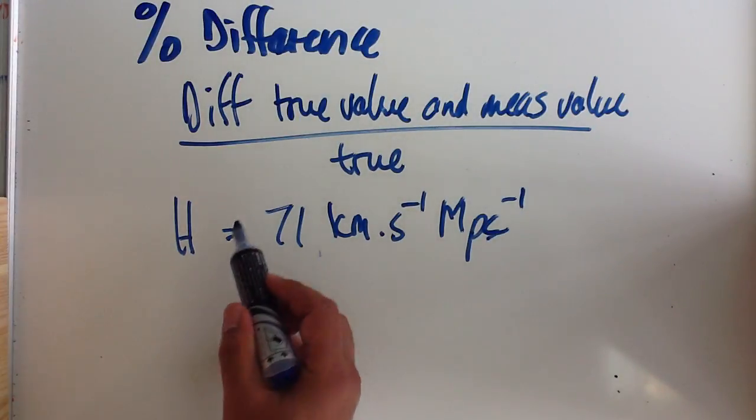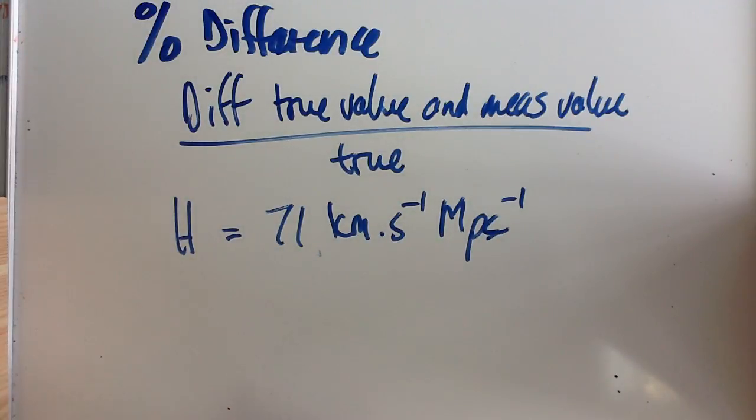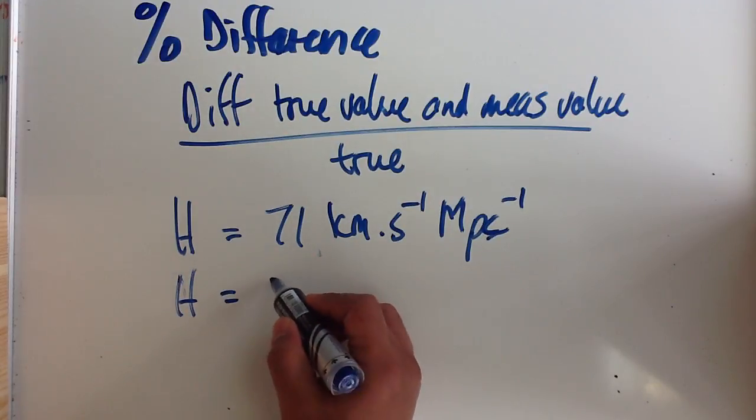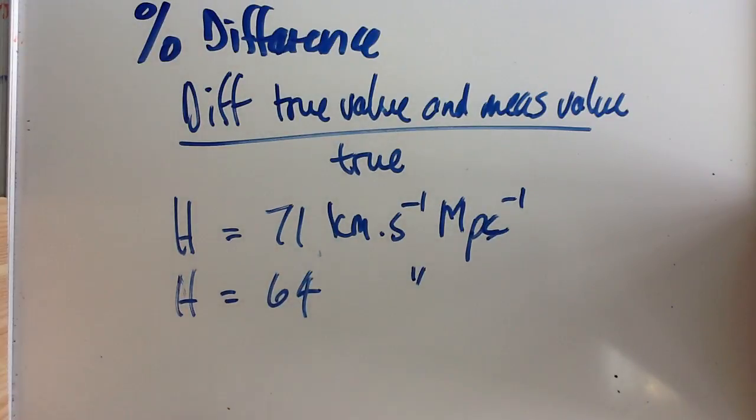So that's the value that is stated in a question. And you are asked to calculate a value for Hubble's constant and your calculated value comes out to be 64 km per second per megaparsec.